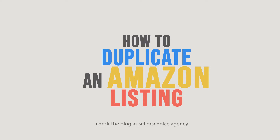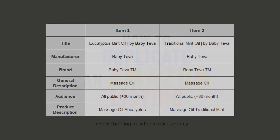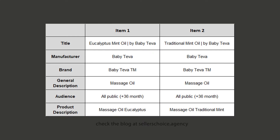There are times when we want to create a new product detail page using information from an existing listing. Let's say that you have two different versions of the same product, but each version has a different product identifier, yet they share the same information like the brand, manufacturer, description, and target audiences.